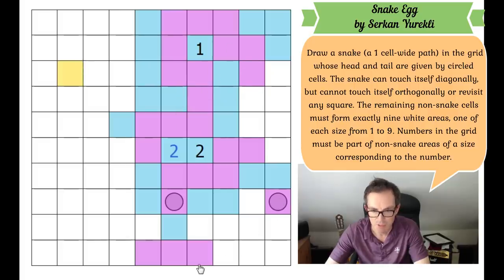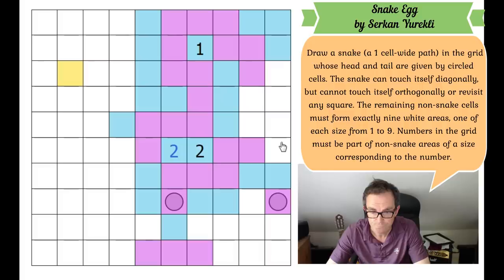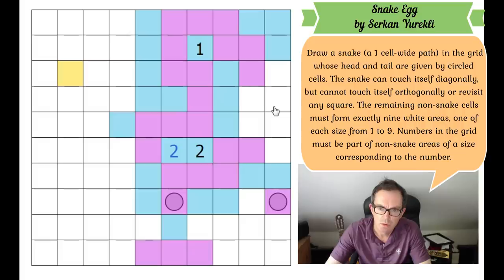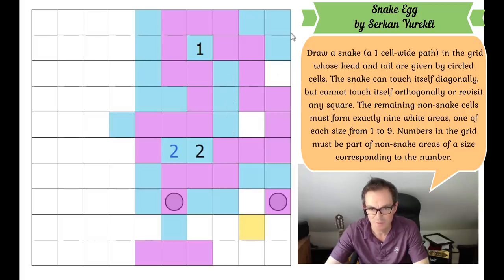So the snake has to come out through here, and the other end has to connect up at the top somehow. One thing that's quite cute: if it comes down and turns that way, that doesn't work — this blue region now has four cells and this other blue region also has four cells, so that doesn't work.